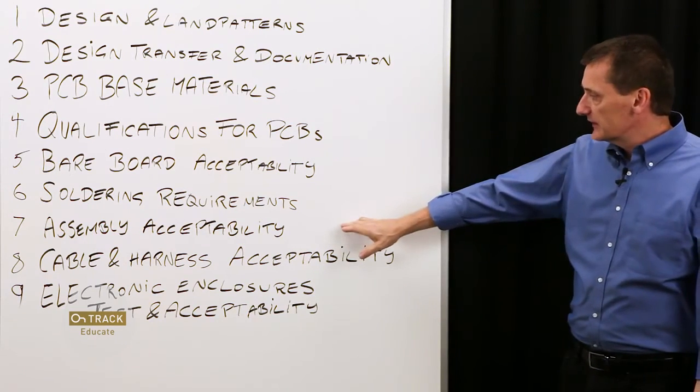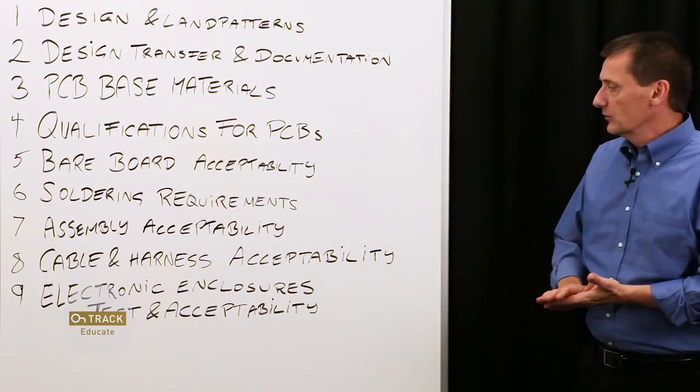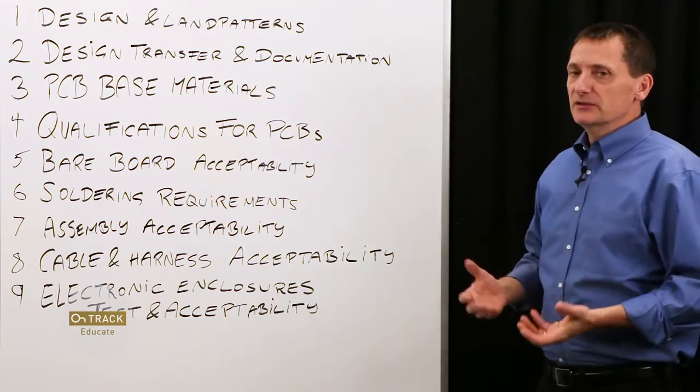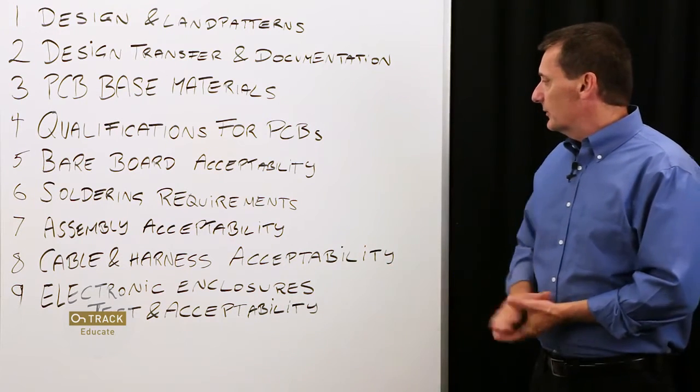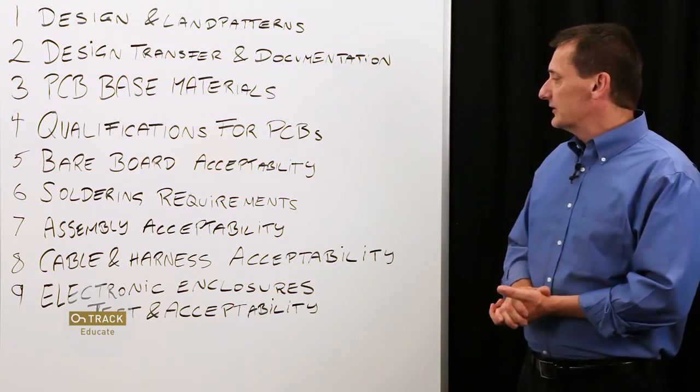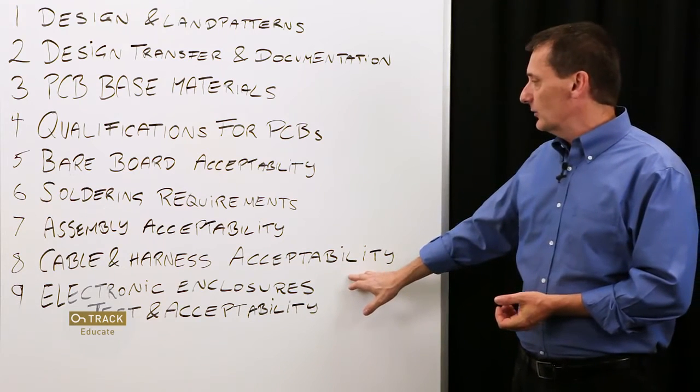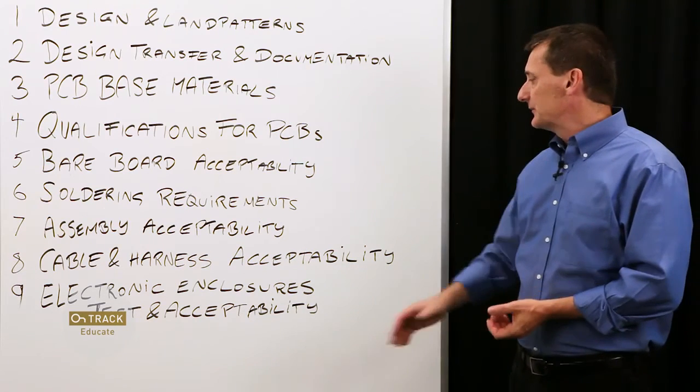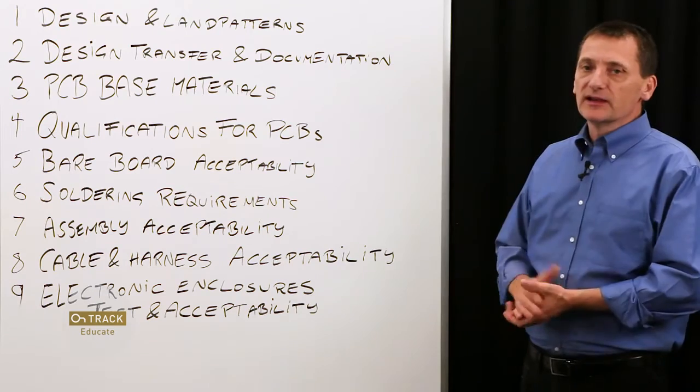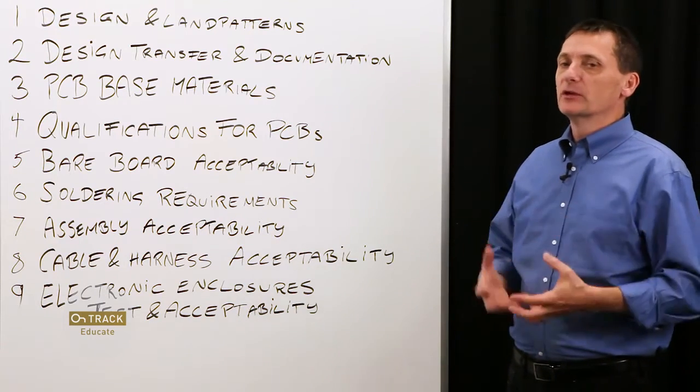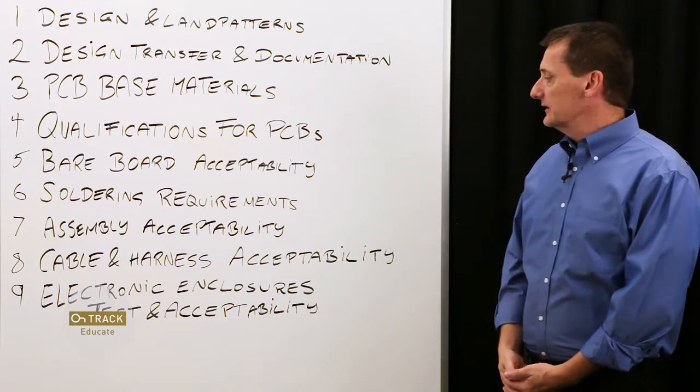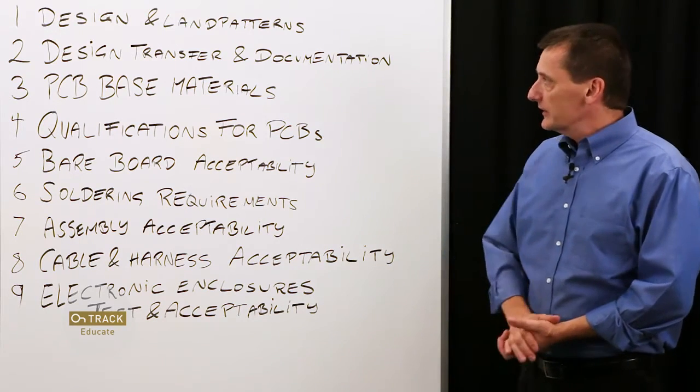Assembly acceptability. What to look for in terms of the results of your assembly process. Cabling and harness acceptability, good design guidelines for cables and harnesses. And then finally electronic enclosure test acceptability. How to get everything packaged together as one product to be tested and assured of high quality.